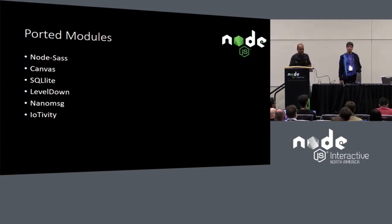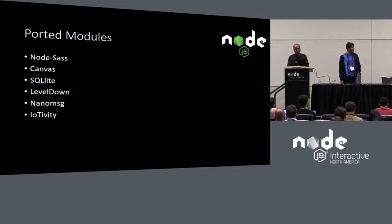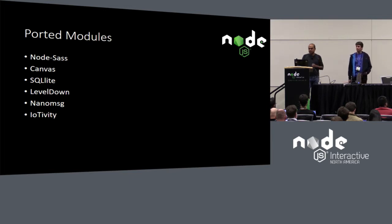In that process, we successfully ported popular modules including node-sass, canvas, SQLite, LevelDown, and nano-message — modules that have a pretty sufficient API surface tied to V8. We were able to replace that with the NAPI API successfully.